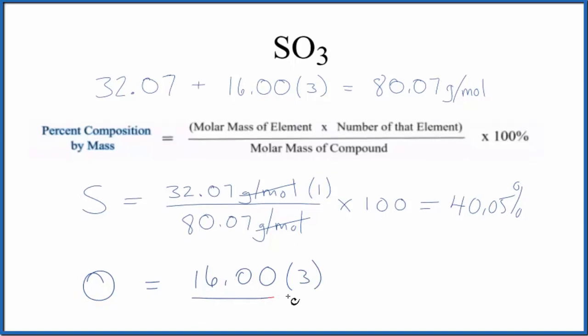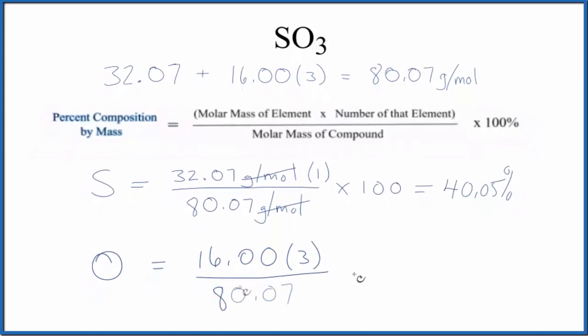Then we divide by the molar mass of the compound, multiply by 100, and we end up with 59.95% for the oxygen in SO3.